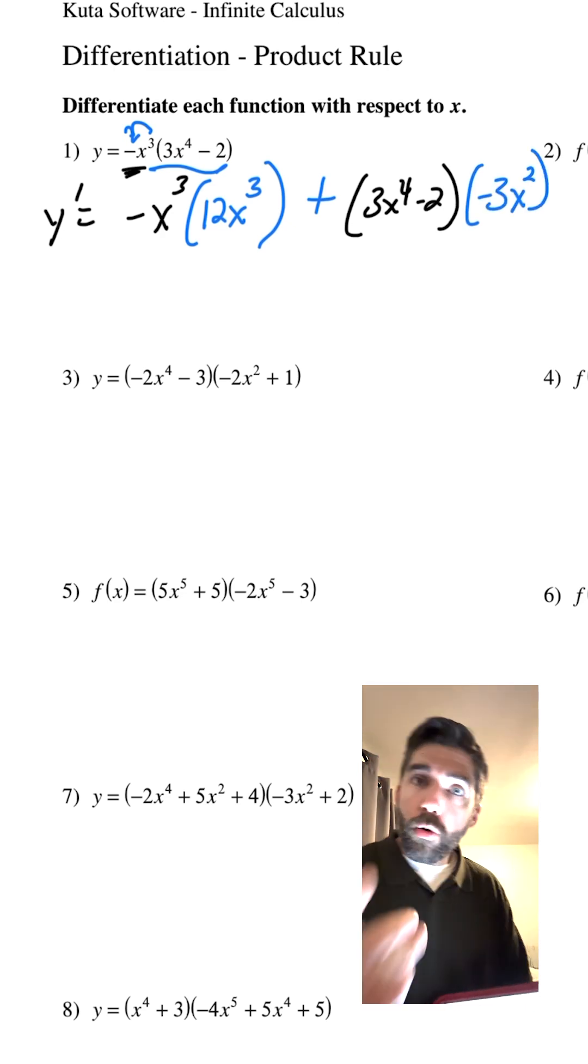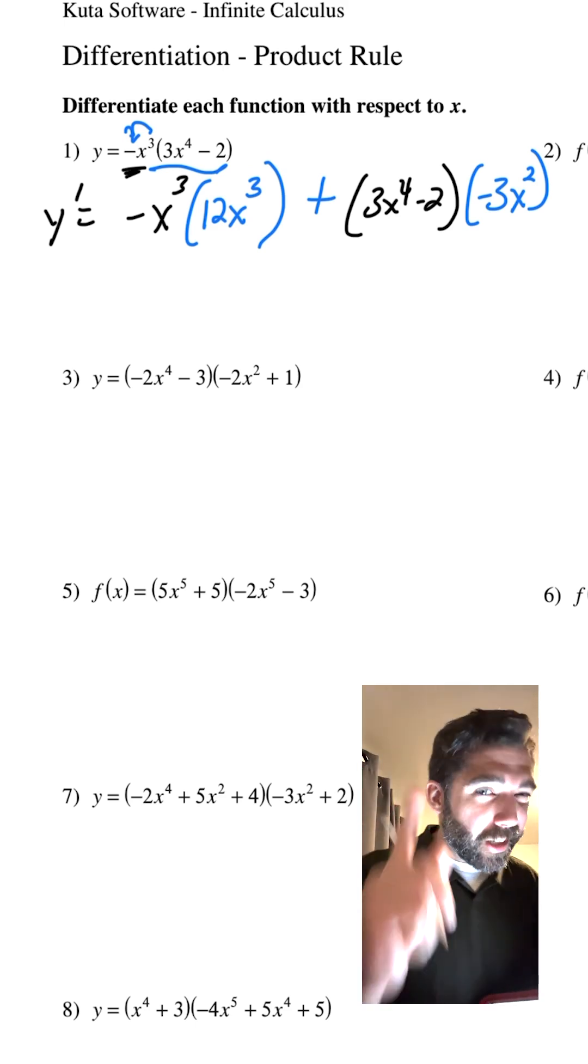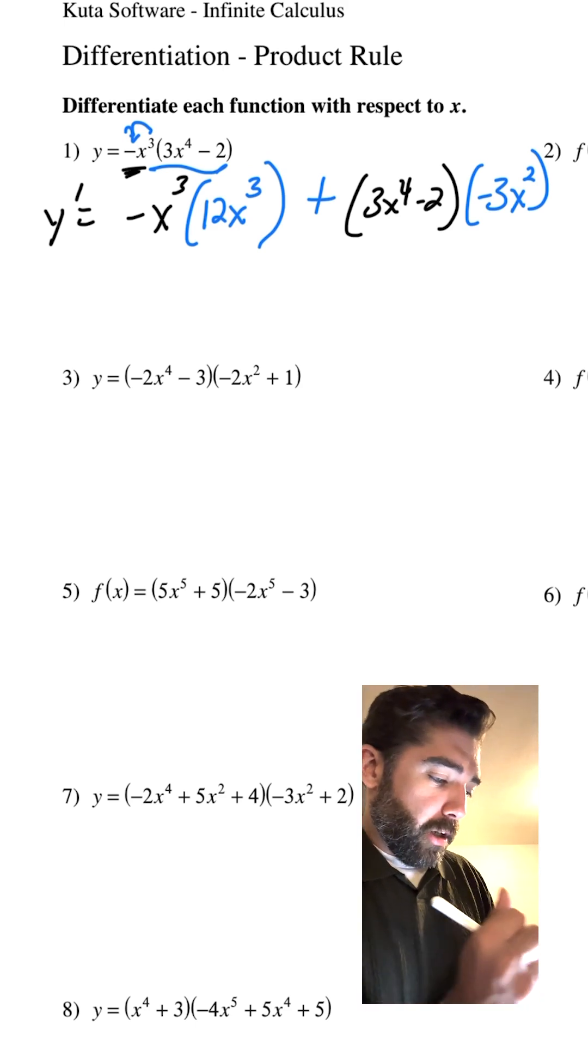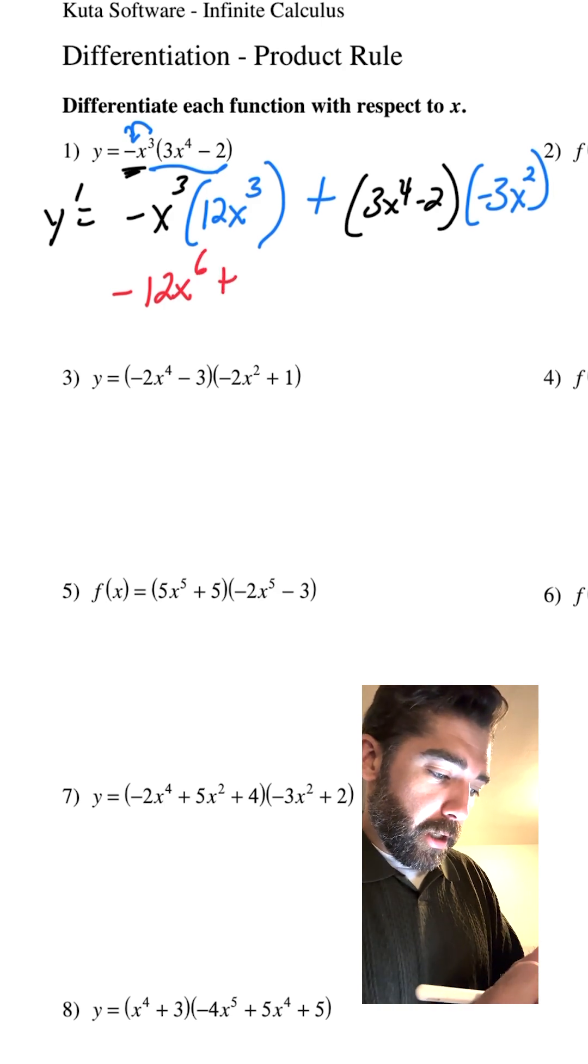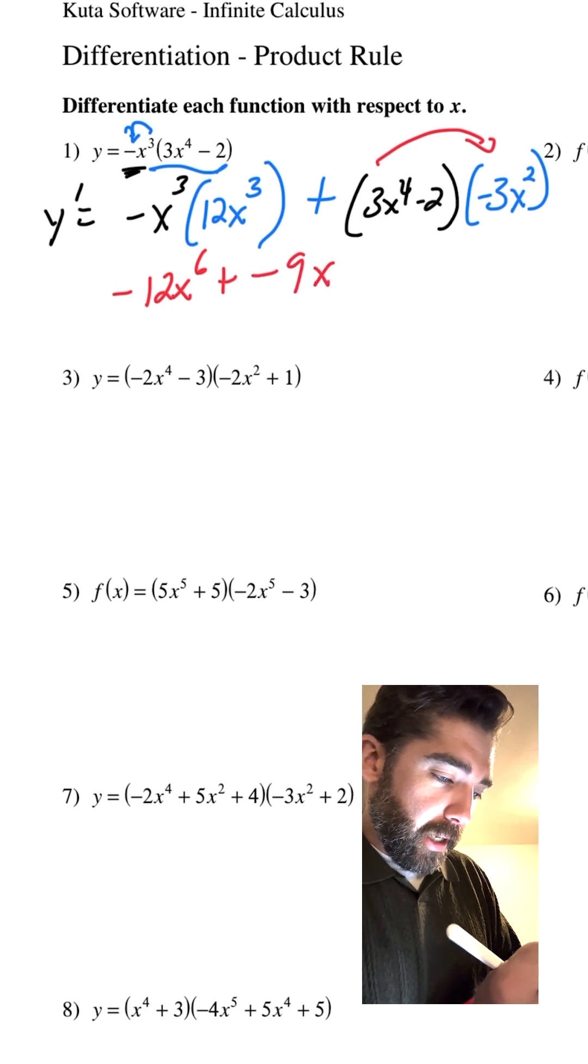We could leave it like that, or we can simplify. And I hear you, you're saying let's simplify. Here it is. Multiply. Negative 12x to the 6th power. Plus, we're going to distribute. 3 times 3 is negative 9x to the 6th power, and positive 6x squared.